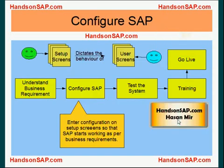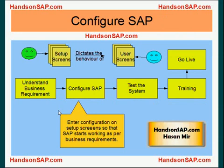So this is what an implementation process looks like. First, you understand the business requirement of the client, then you configure the system accordingly, then you test the system, then you train the end users, and then you put the system in production called go live. So consultants have access to setup screens, end users have access to end user screens.